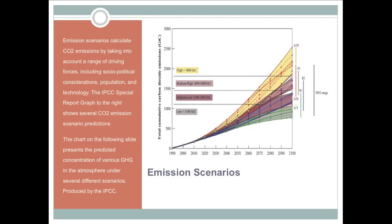An emission scenario calculates greenhouse gas emissions for a set timeframe by modeling social, political, technological, and economic trends, as well as net emissions from natural processes. Some scenarios assume aggressive international abatement commitments, such as scenario B1. Some make assumptions on what policies are politically feasible and likely, while others attempt to model a business-as-usual scenario, such as scenario A2, in lieu of abatement policy beyond what has already been implemented.